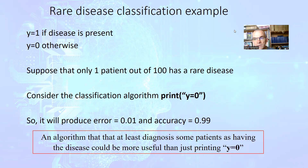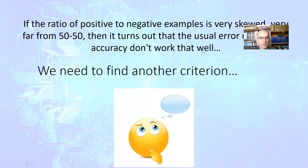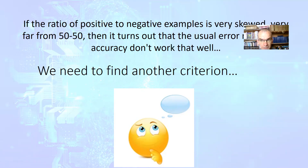So how must we evaluate the effectiveness of a classification algorithm in this case? We have to find another criterion, because sometimes we have so-called skewed datasets, when the ratio of positive to negative examples is far from 50-50.